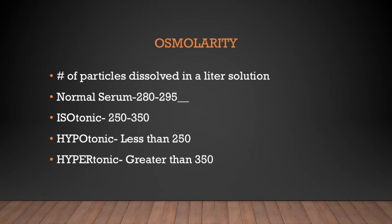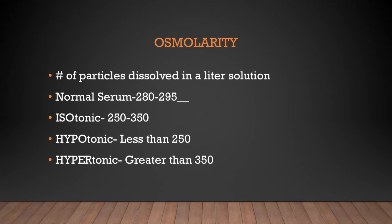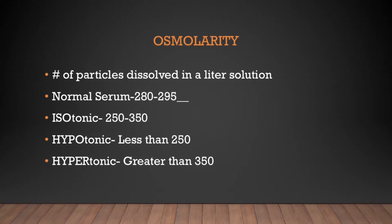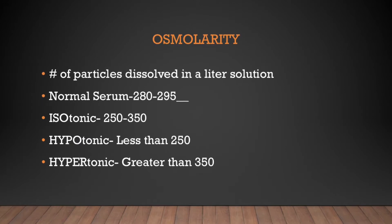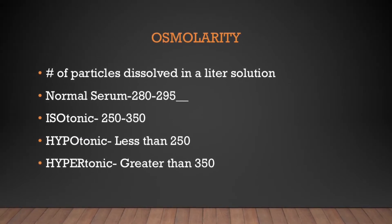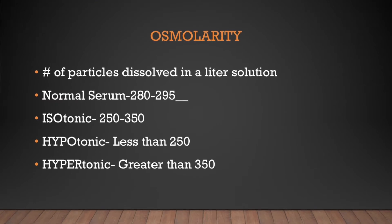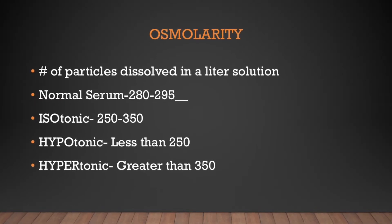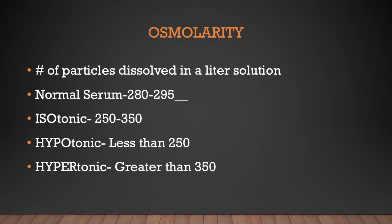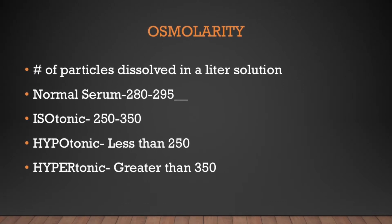Osmolarity is the number of particles dissolved in a liter of solution, measured in milliosmoles. Normal serum osmolarity is 280 to 295 milliosmoles — that's what's running through your blood. An isotonic solution mimics that concentration, falling in the range of about 250 to 350 milliosmoles.